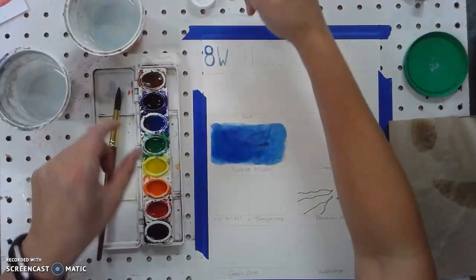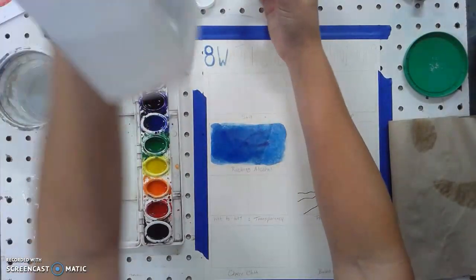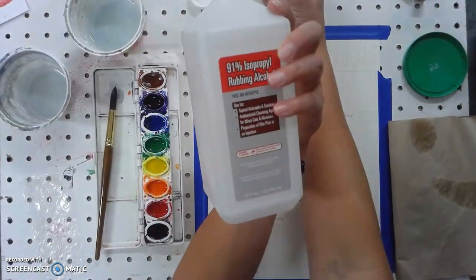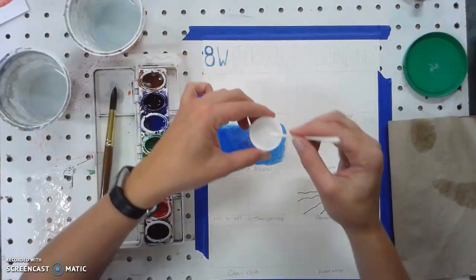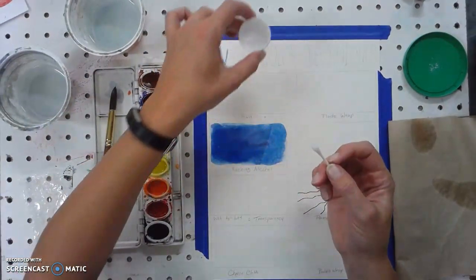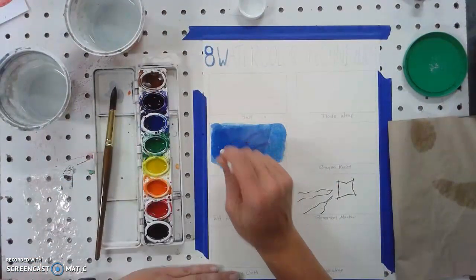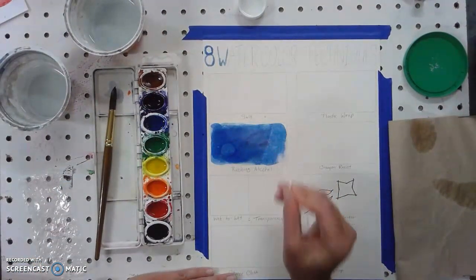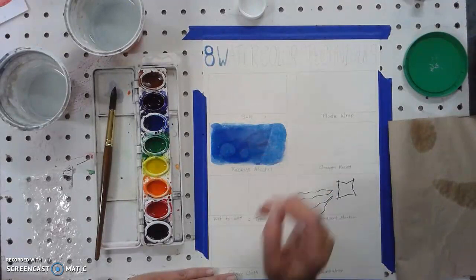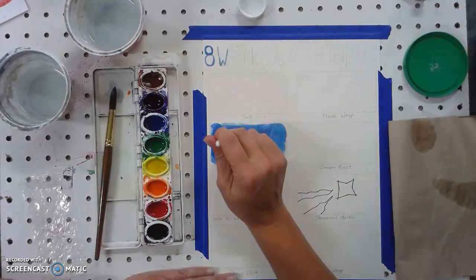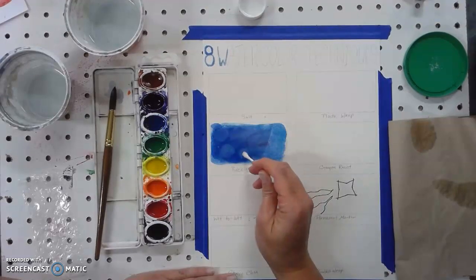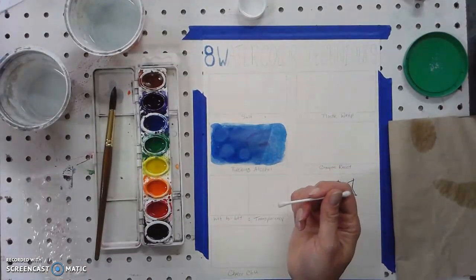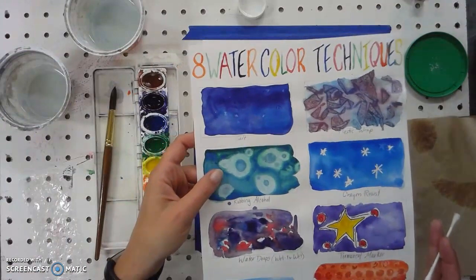With the rubbing alcohol, it's just plain old rubbing alcohol bought it at Walmart. I'm going to dip that Q-tip right into my rubbing alcohol and then I'm going to press it onto the paper and you can see that it kind of starts to remove that color. You might not be able to see it very well on camera, but when it completely dries it'll show up a lot more like that one.